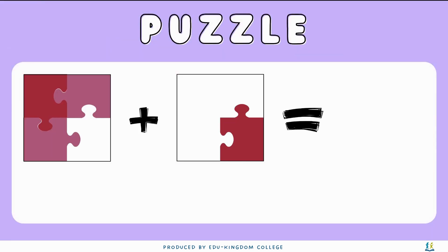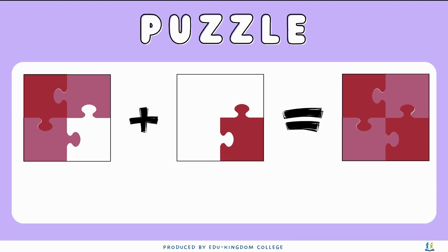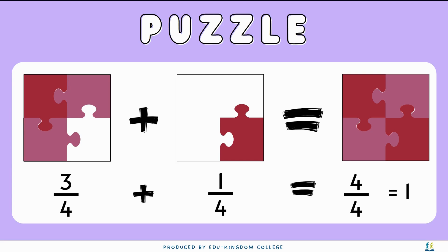Imagine you have a four-piece puzzle. Three pieces are already pieced together and there's one piece left. Once you put the last piece in it's going to give you a full puzzle. If we think of this in terms of fractions, three quarters of the puzzle was already pieced together and only one quarter is left. So once we add the two fractions together it's going to give us 4 over 4, which is the whole puzzle.